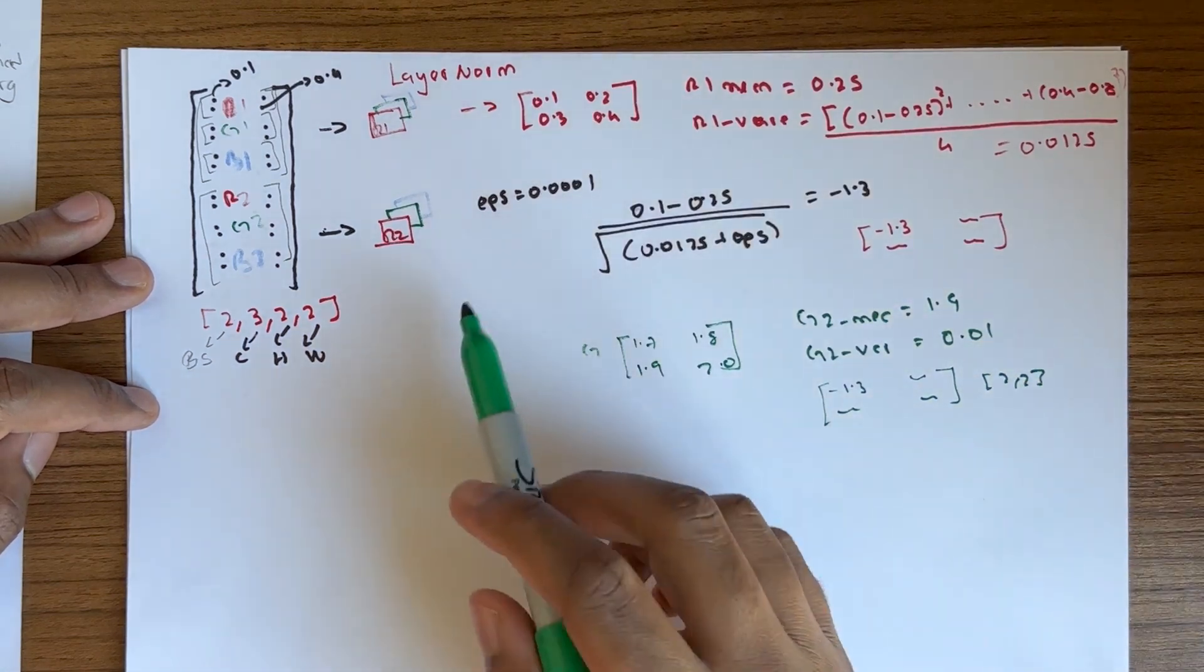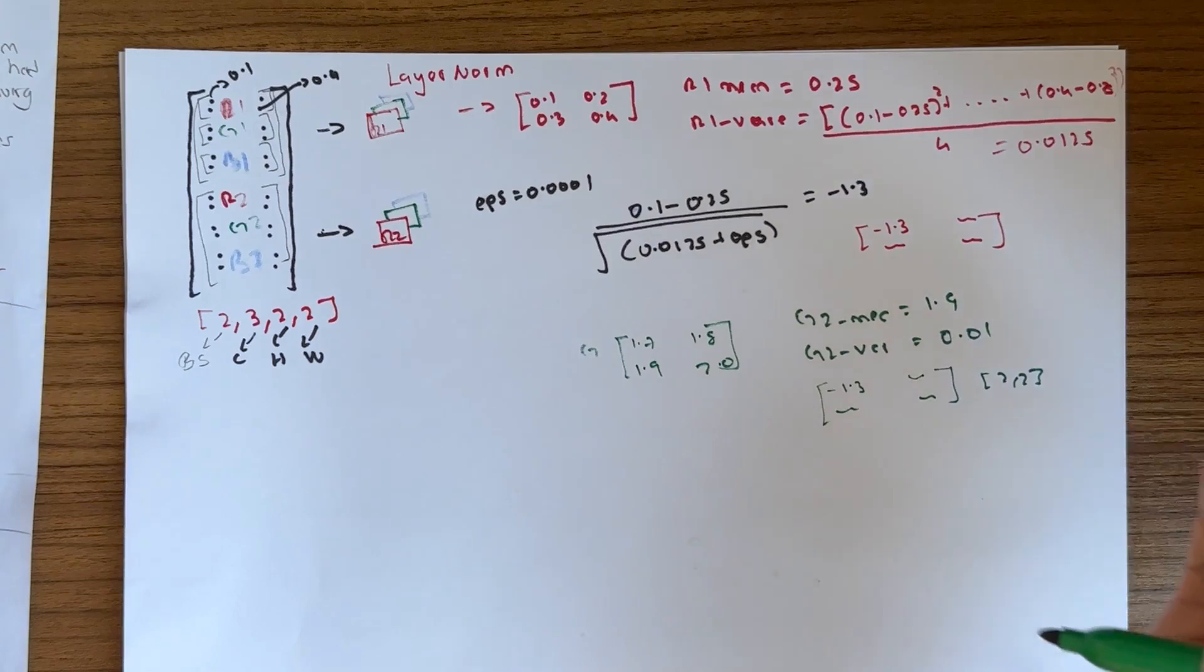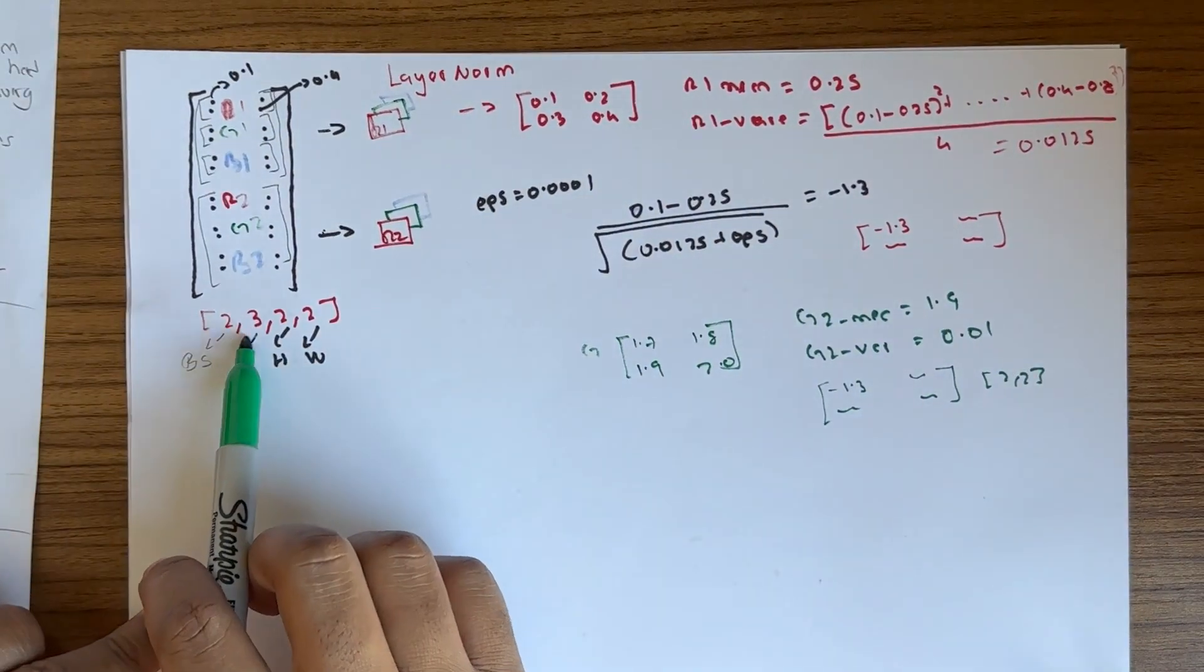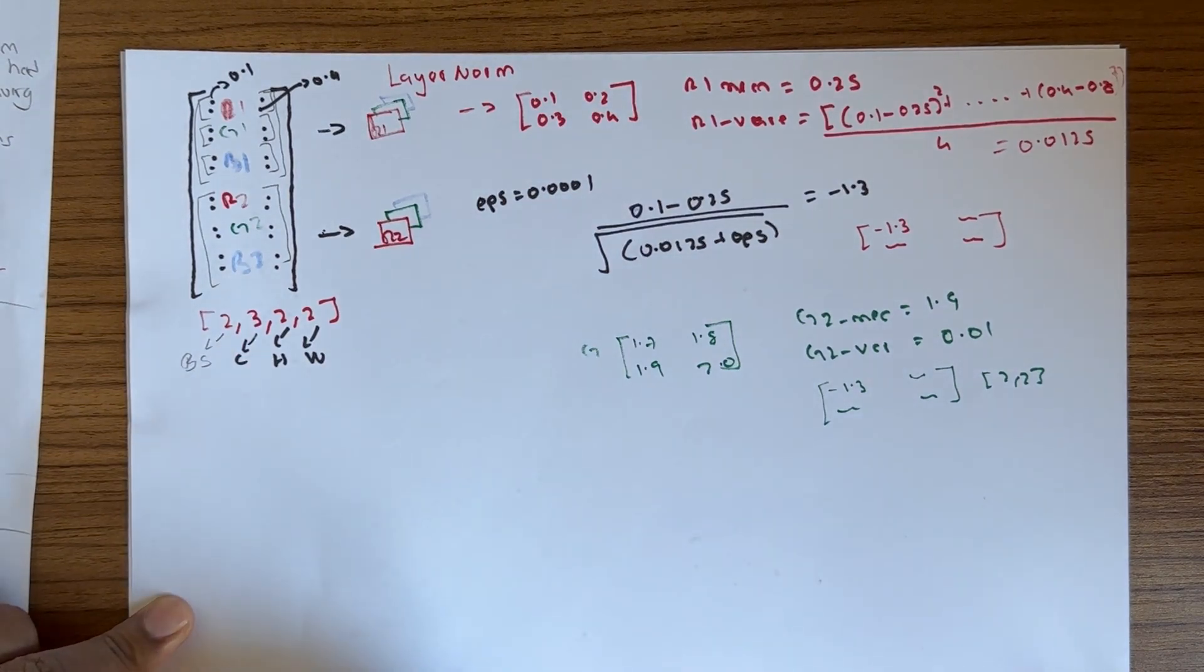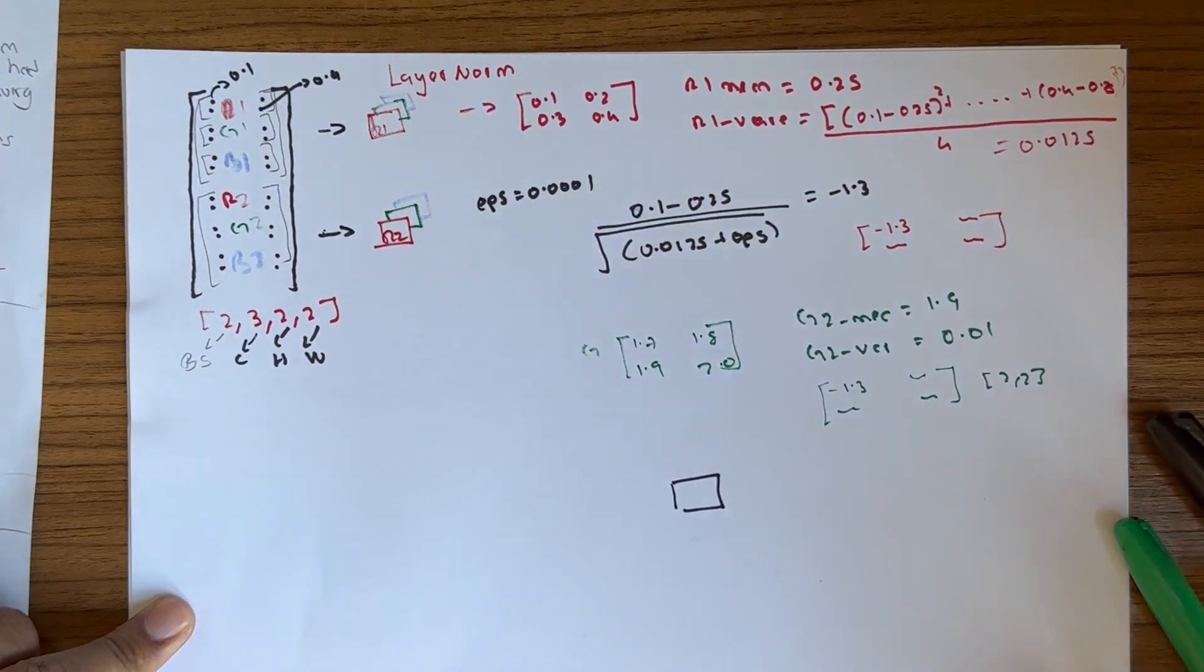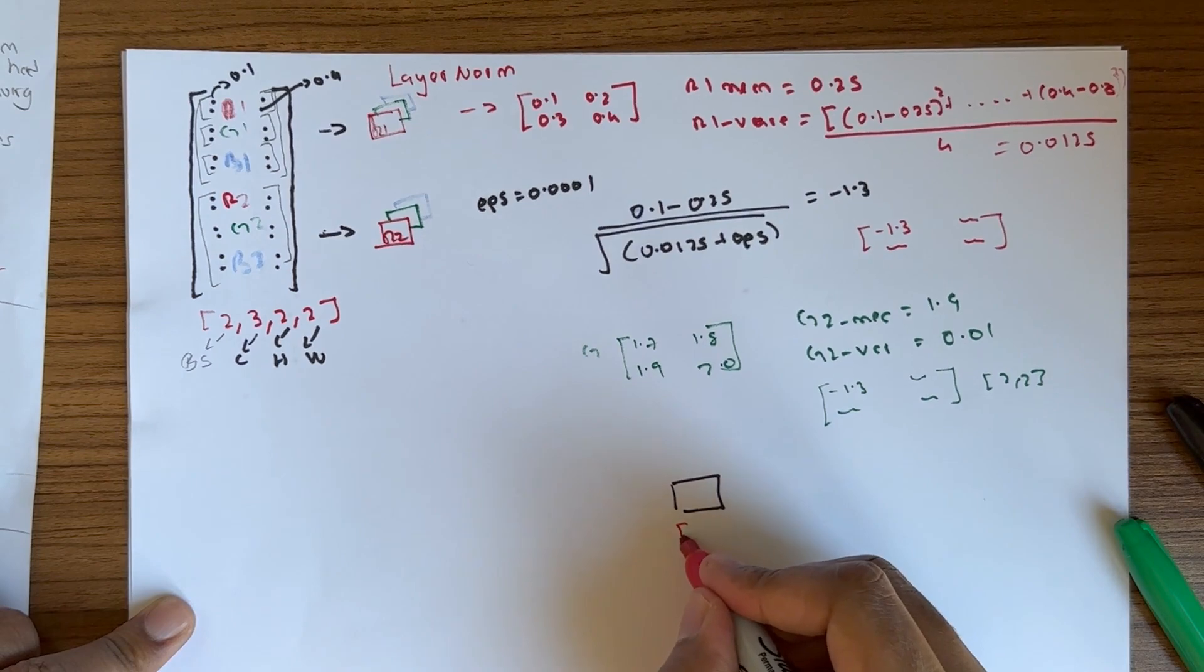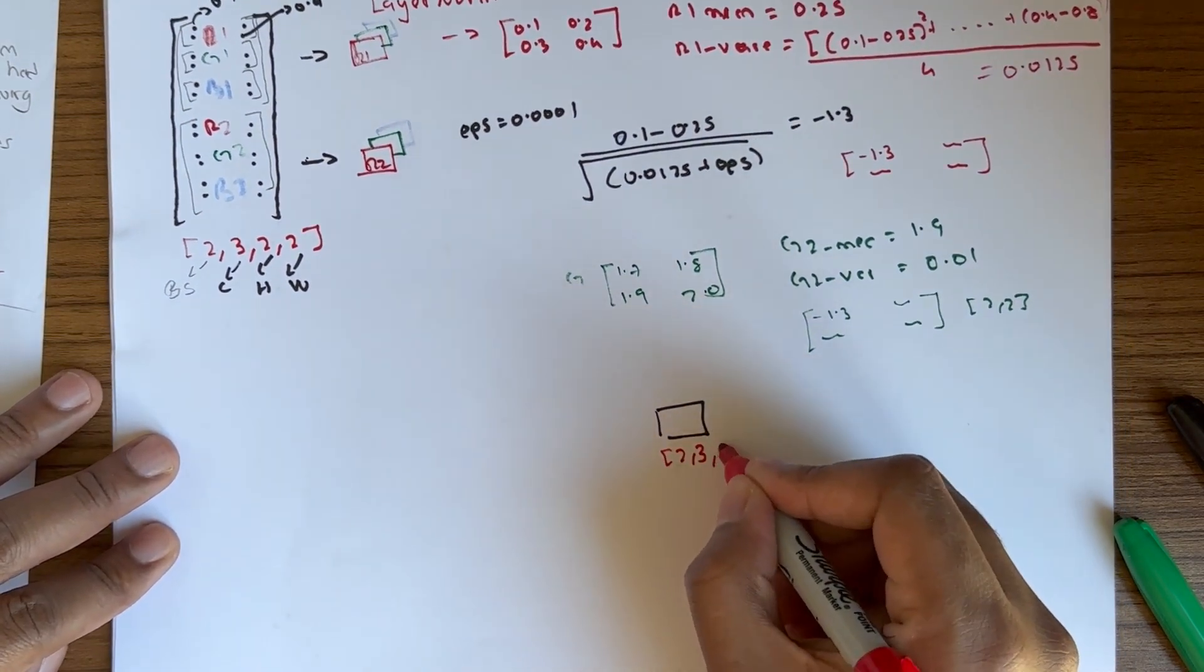After you finish normalizing all six channels, you put everything together to go back to the original dimension. You concatenate them to get the original dimension of 2 by 3 by 2 by 2.